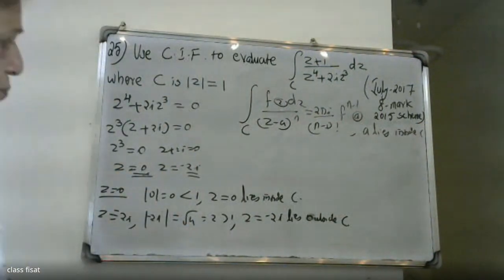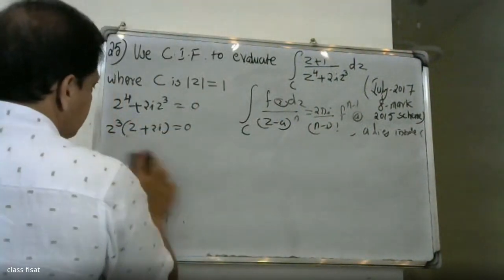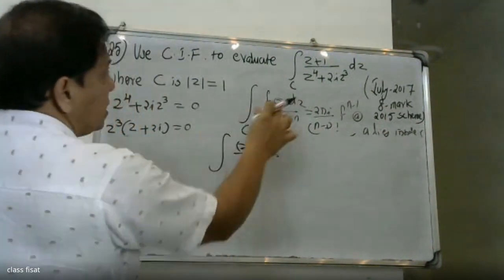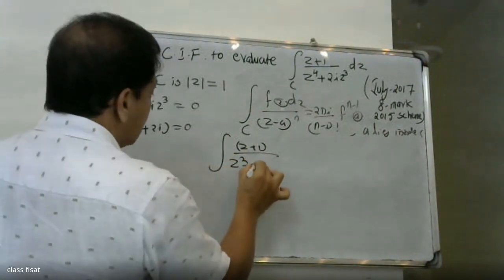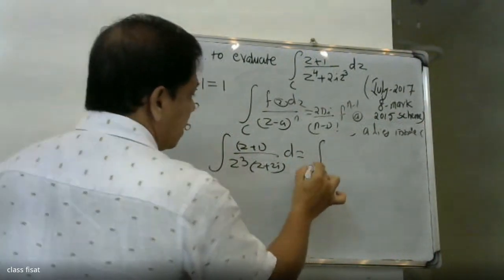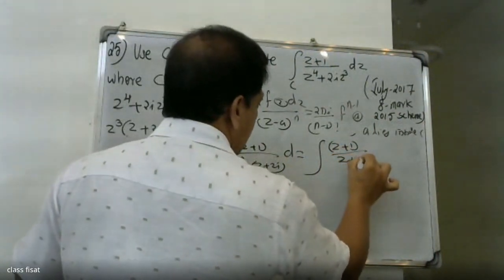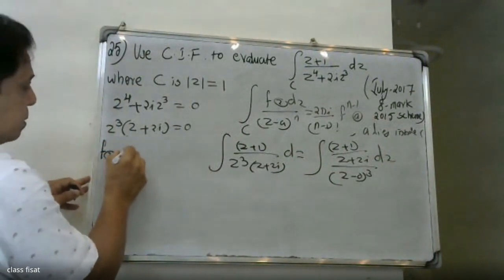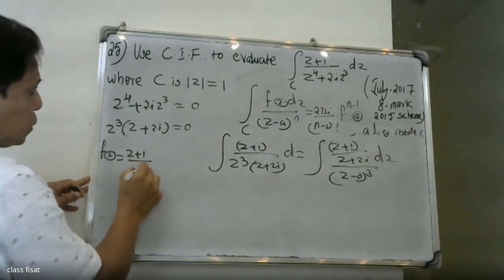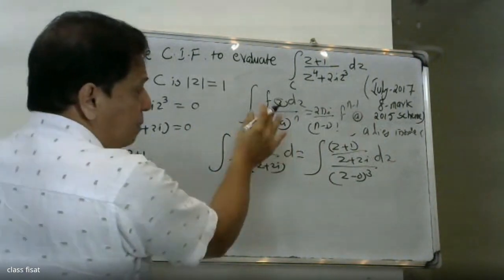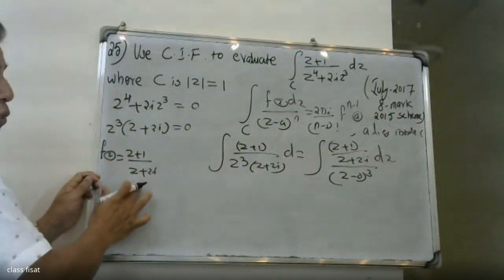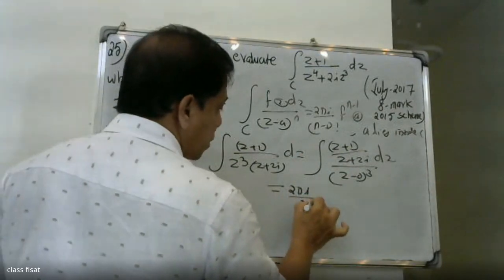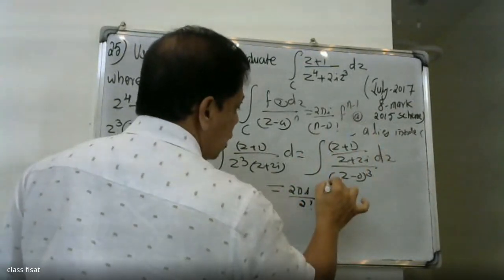We write the integral as ∮ (z+1) / [(z+2i) · (z−0)³] dz. Here f(z) = (z+1)/(z+2i), with a pole of order 3 at z=0 inside the contour. Applying the formula: integral = (2πi)/(3−1)! · f''(0).